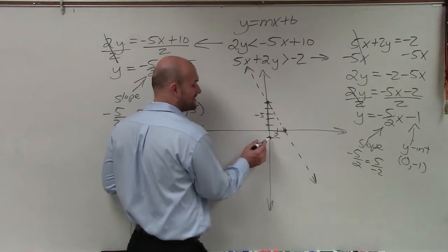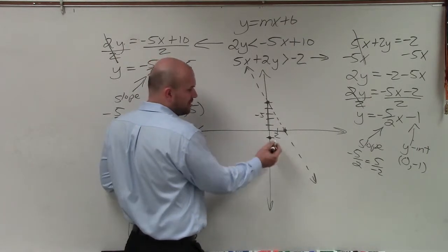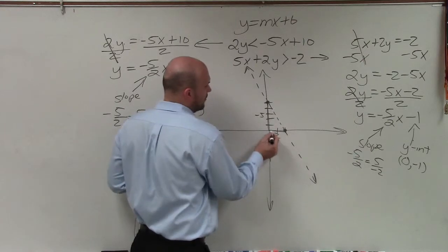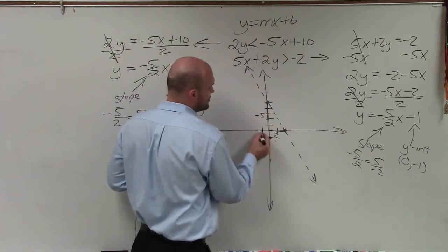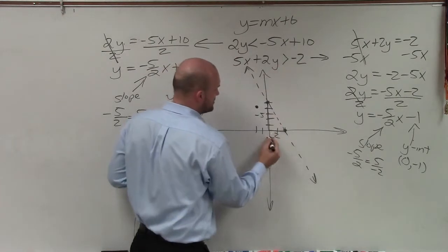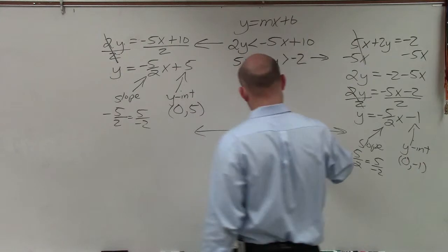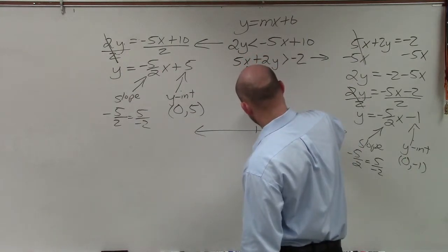So this one is 5 over negative 2, which is actually the exact same. Well, rather than going down 5 to the right 2, which you could do, you could also go up 5, 1, 2, 3, 4, 5, to the left 2. And this one is also going to be a dashed line.